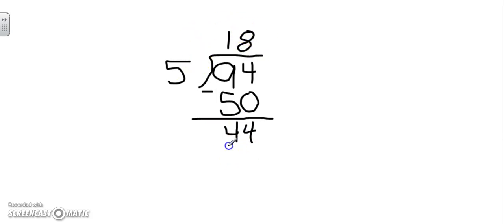8 ones times 5 is 40. I had 44 ones to divide. I was able to divide 40 of them, and so I subtract them away. 44 minus 40 equals 4. Because I can't divide 4 ones into 5 groups, I have a remainder of 4.